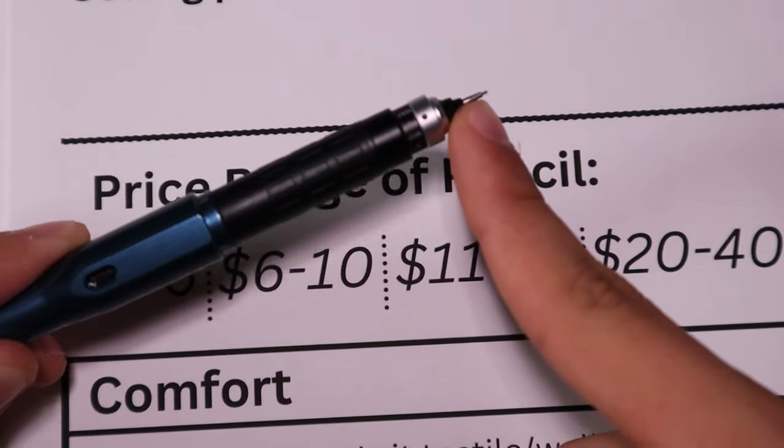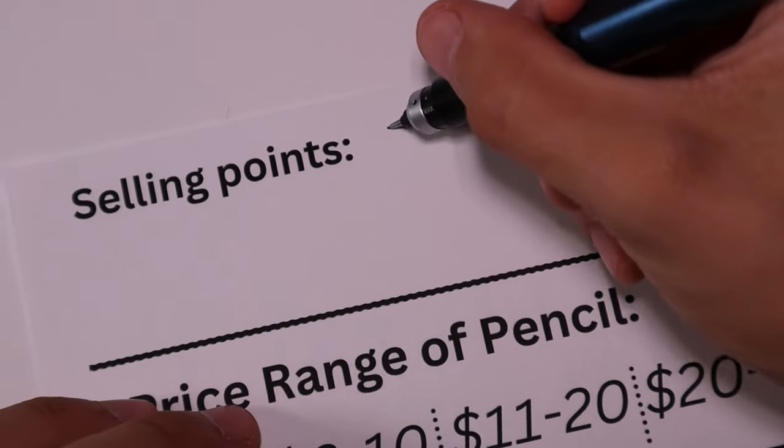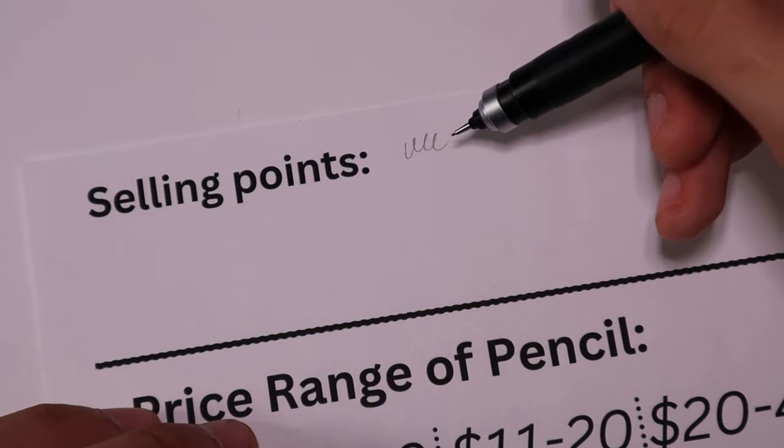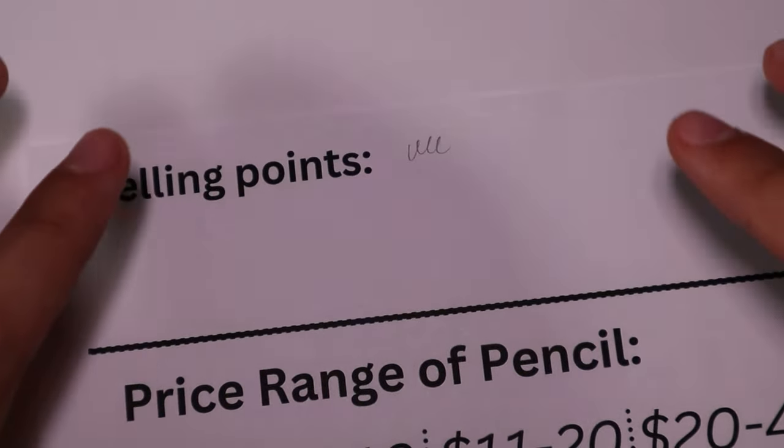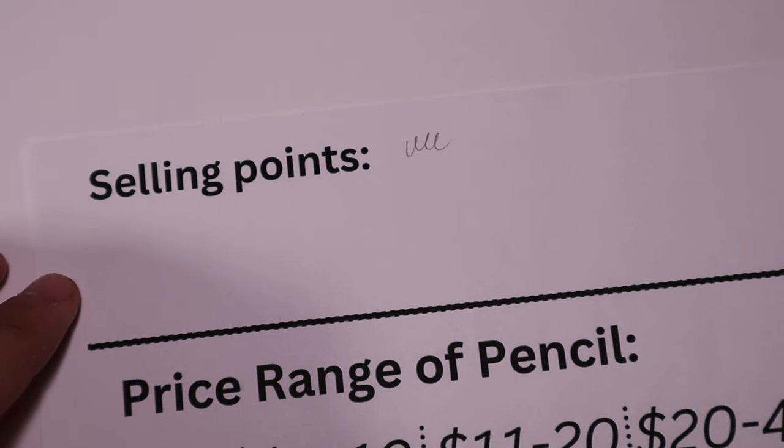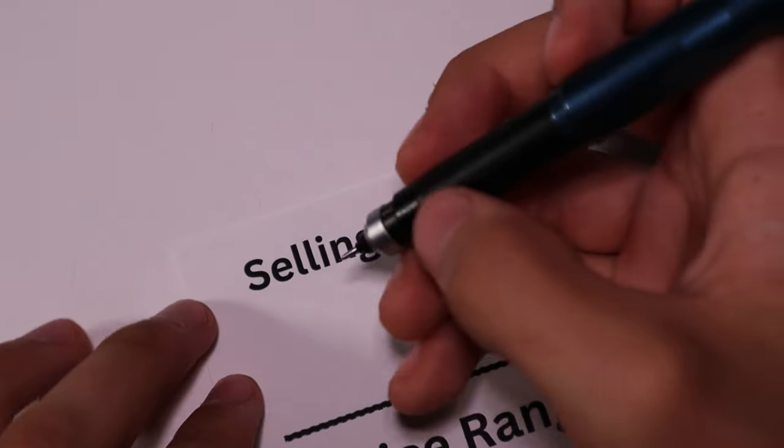It's actually rotating this lead as well, and that helps with keeping your lead sharp. So if I write like this you can see that the lines are very thin, so it keeps your writing condensed and it just makes it a lot nicer to write with because it doesn't take up as much space. So that's our first selling point.